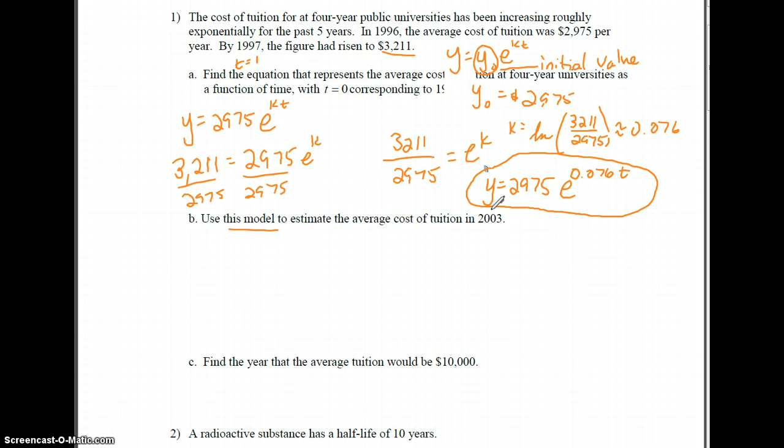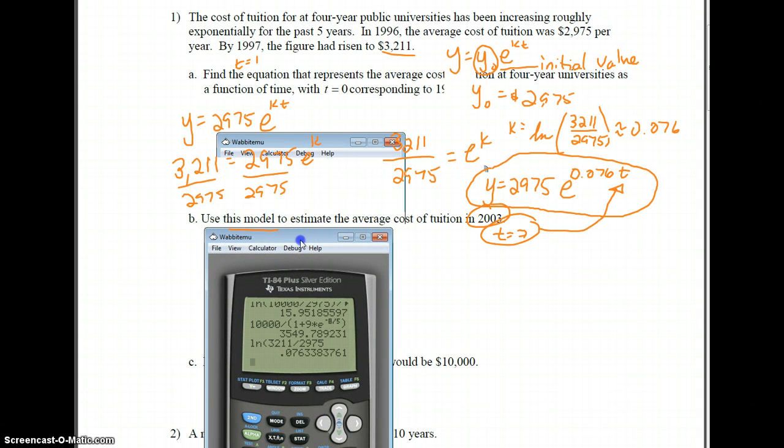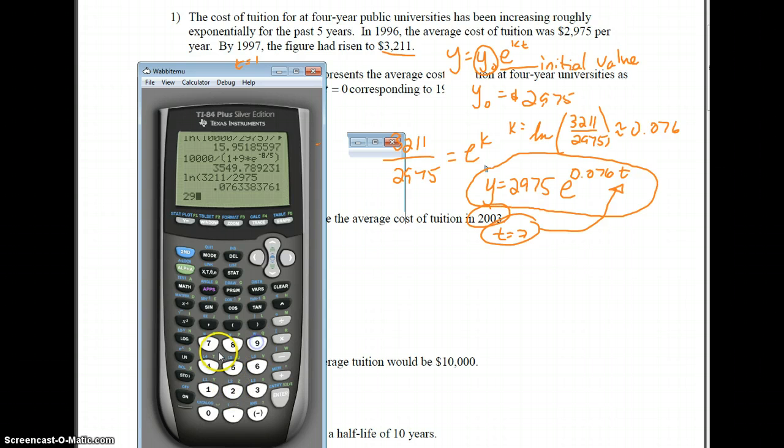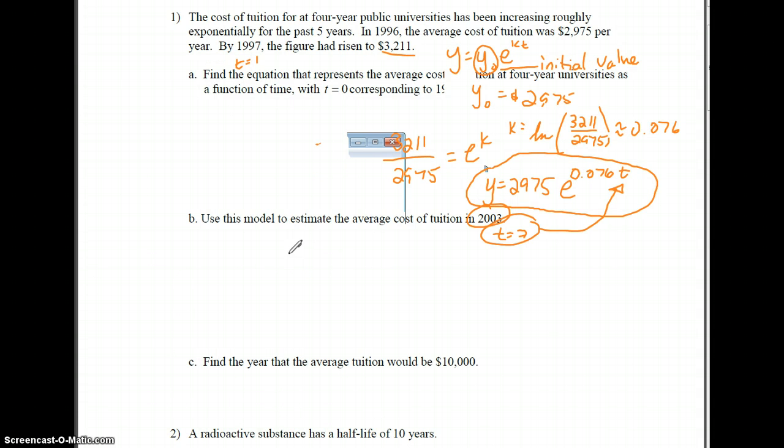I'm going to use this model to estimate what the cost is in 2003. In 2003, we started in 1996, so this is going to be a time of seven years after 1996. I'm just going to plug in seven in right there and solve that. I'm going to take 2,975 times e to the 0.076 times seven years, and I'm going to get 5,064. So my value here is y equals 5,064.